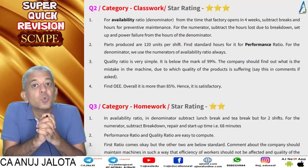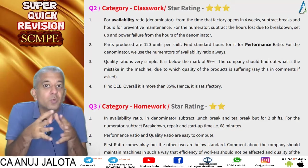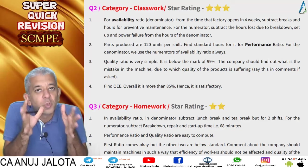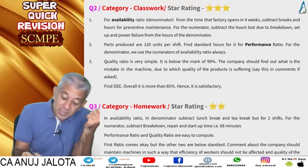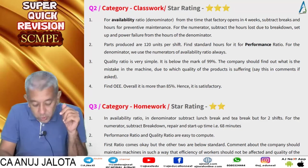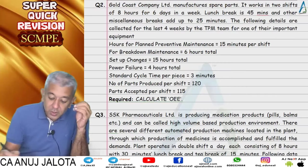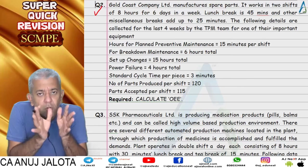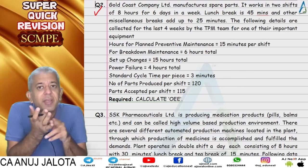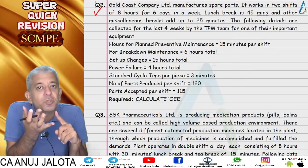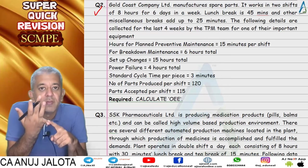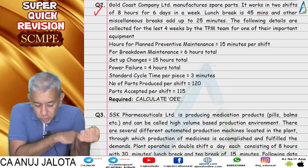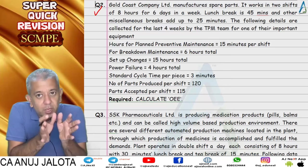Welcome back to our super quick revision series. We are starting with question summaries of Total Productive Maintenance. Question number two required finding OEE, for which we need the availability ratio, performance (efficiency) ratio, and quality ratio.